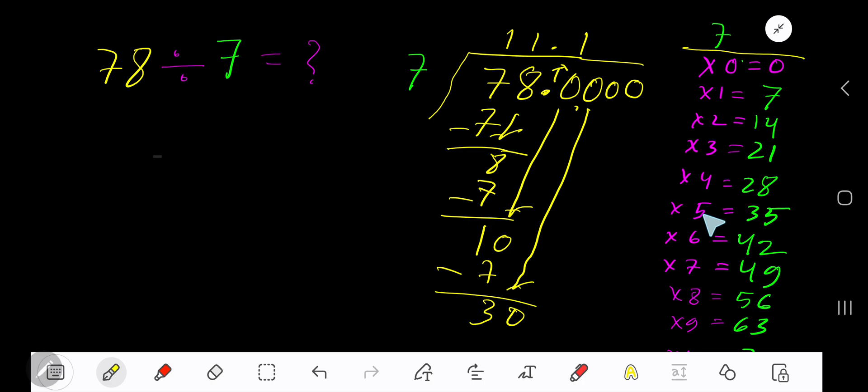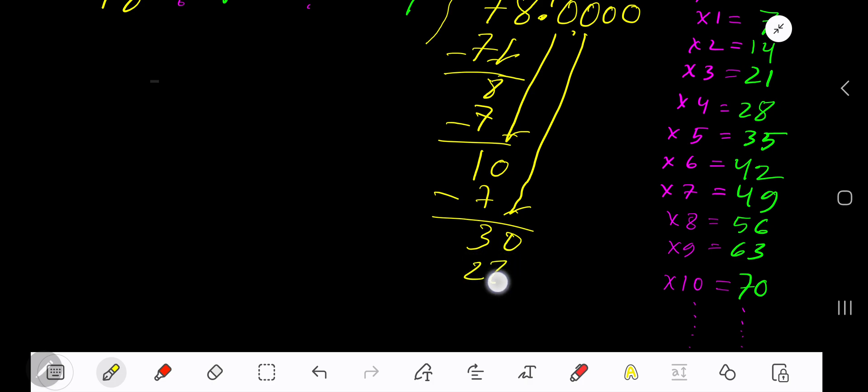7 goes into 30 how many times? 5 times 7 is 35, which is greater, so 4 times. 4 times 7 gives you 28. Subtract: 2. Bring down another 0.